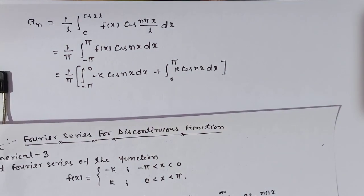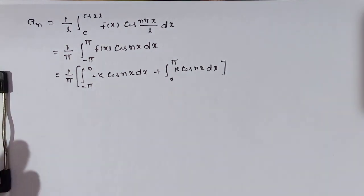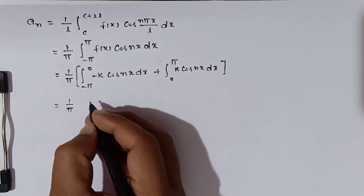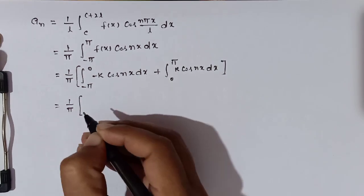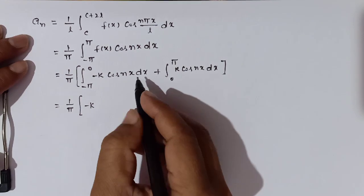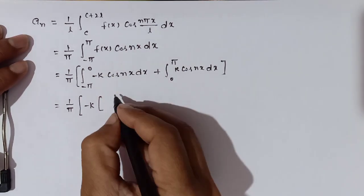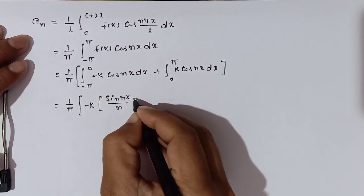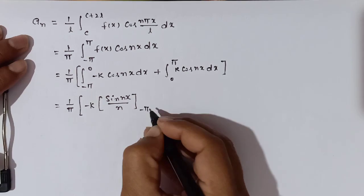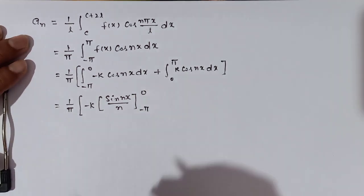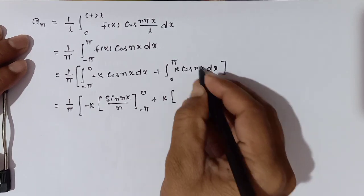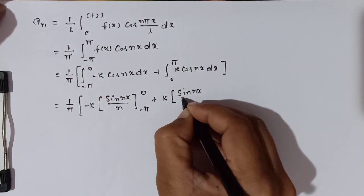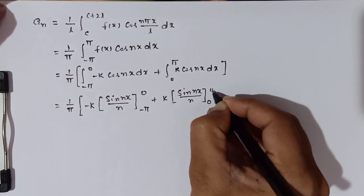Now let's solve this integration. We get 1/π times: -k times [sin(nx)/n] from -π to 0, plus k times [sin(nx)/n] from 0 to π.